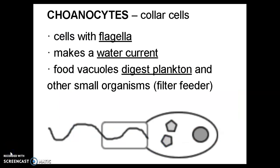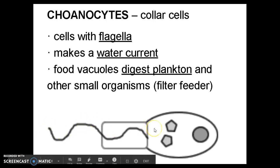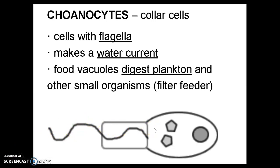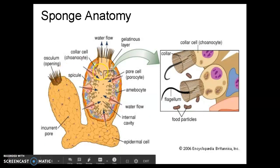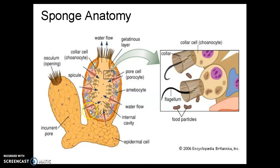Sponges create a current through their bodies using cells called choanocytes, or collar cells. These are cells with flagella — long tails on the ends of the cells. What these cells do is flap their flagella, and as they move their flagella they push the water upward so it can come in to the sponge and up through the top of the osculum. We can see these choanocytes along the inside edge of the osculum; as their flagella move, they push the water in and up out the top of the sponge.